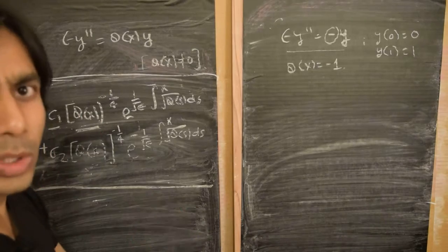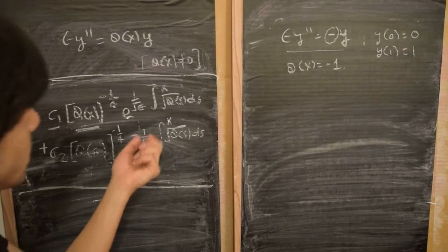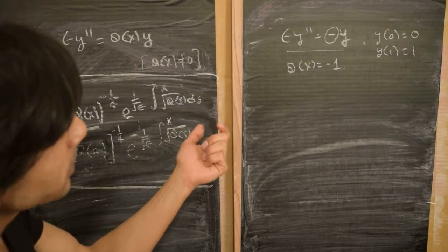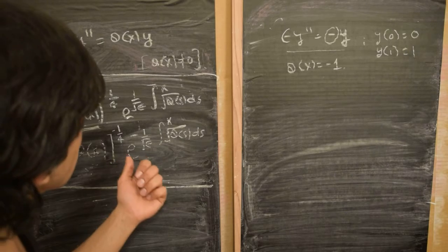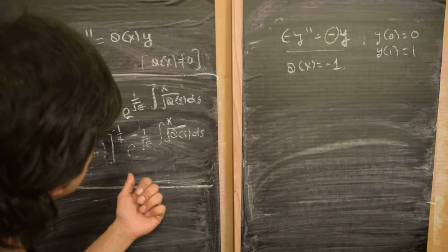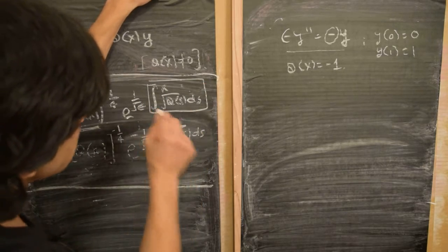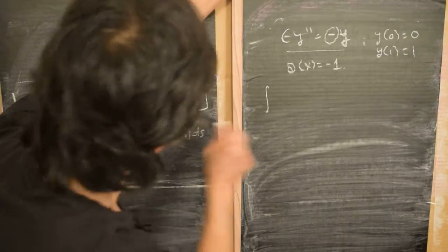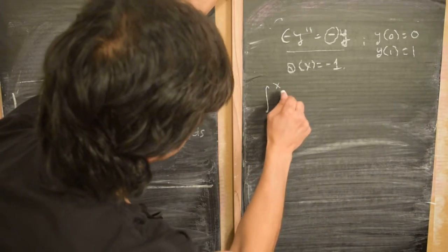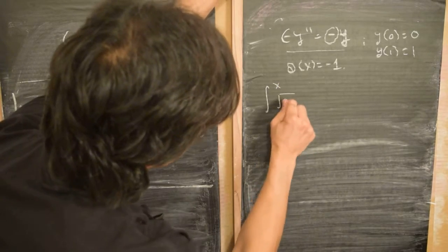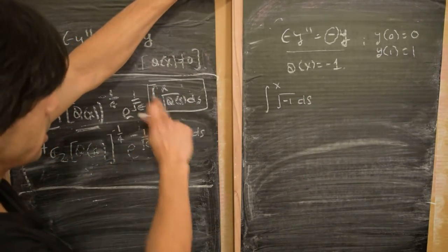Let's see what the WKB solution looks like for this equation. All we need to do is substitute q(x) = −1 into the WKB expression. The key factor appearing in both exponentials is the integral of √q(s) ds, which is the integral of √(−1) ds.